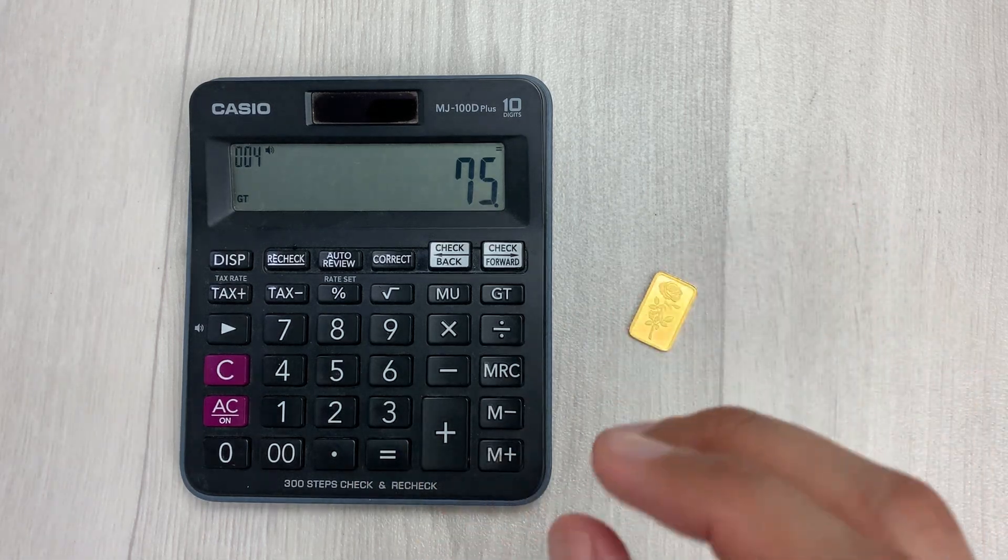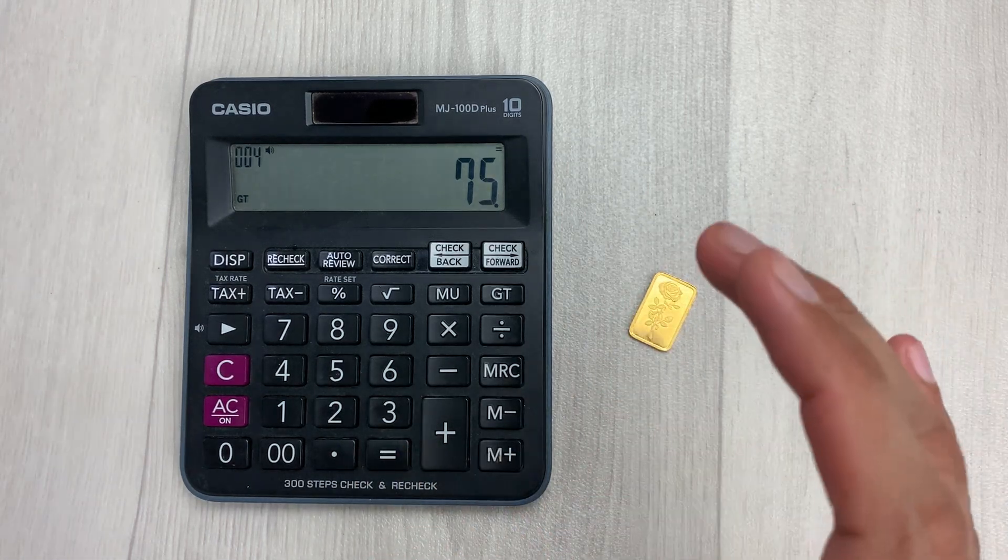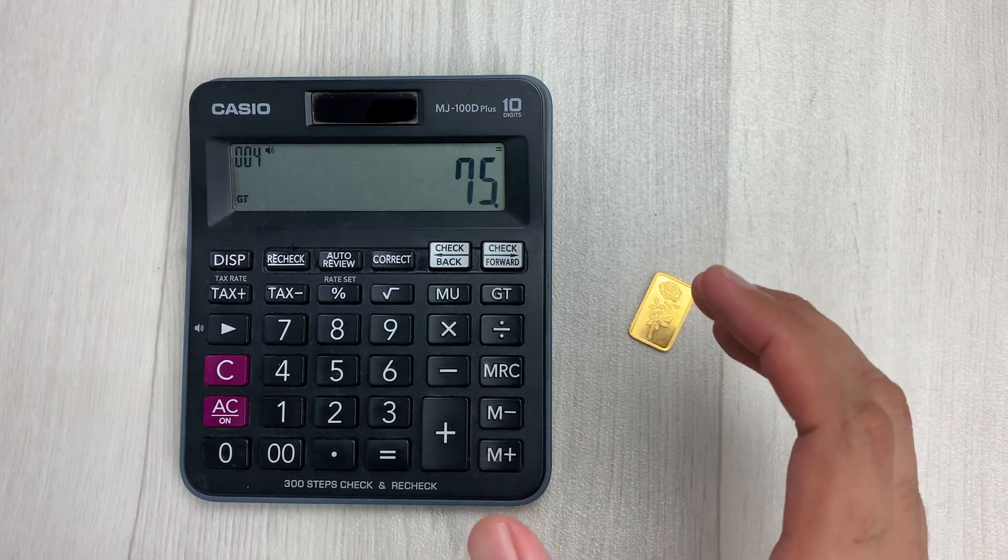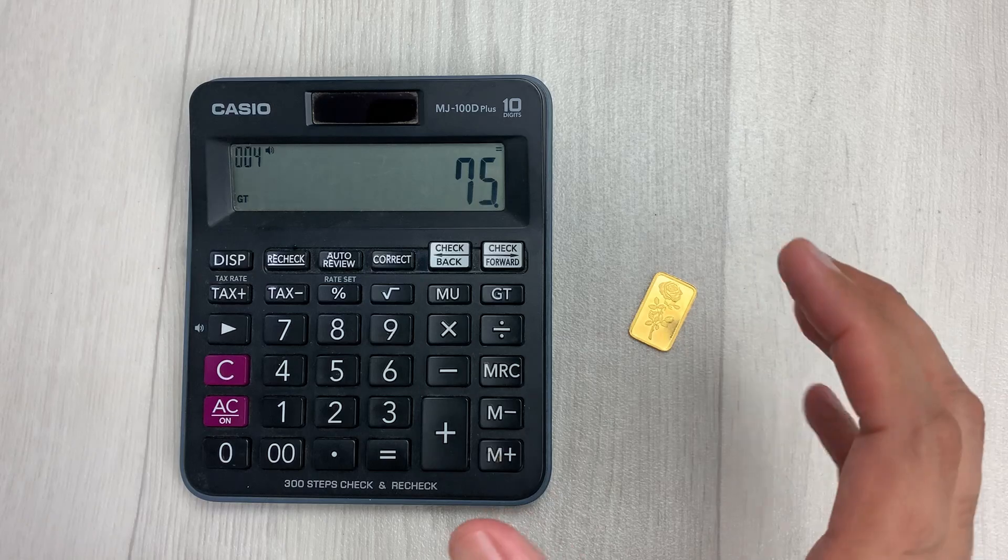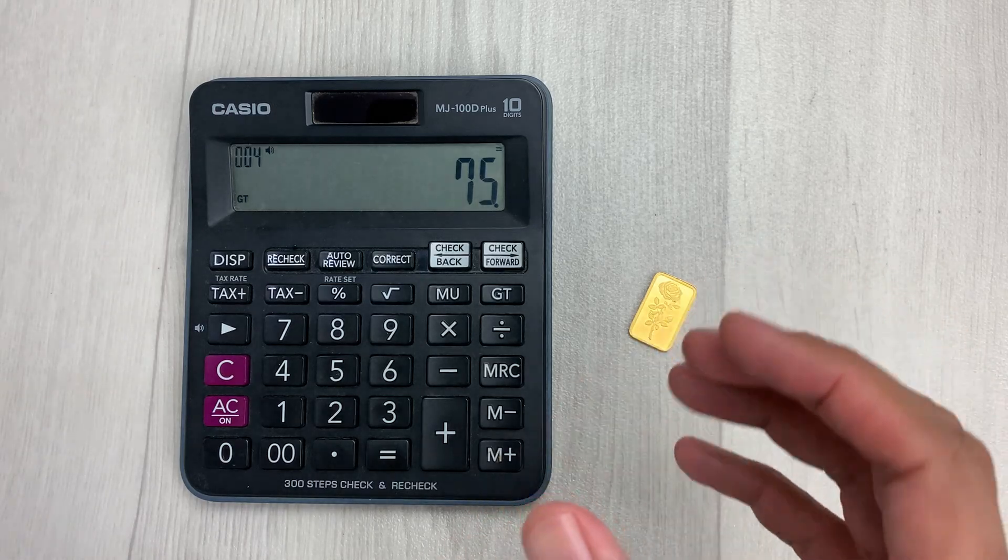Here is the final answer. Your 18 karat gold jewelry contains 75 percent of pure gold, and the remaining 25 percent are other metals inside.